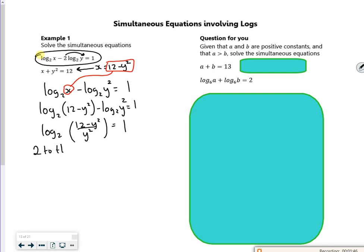So if I raise it like 2 to the power of, it removes the log, so I've got 12 minus y squared over y squared. And that's equal to 2 to the power of 1.